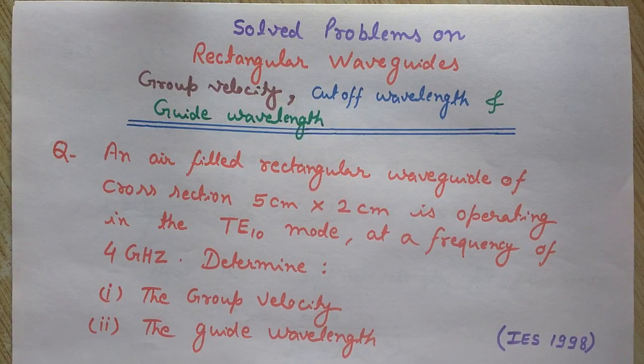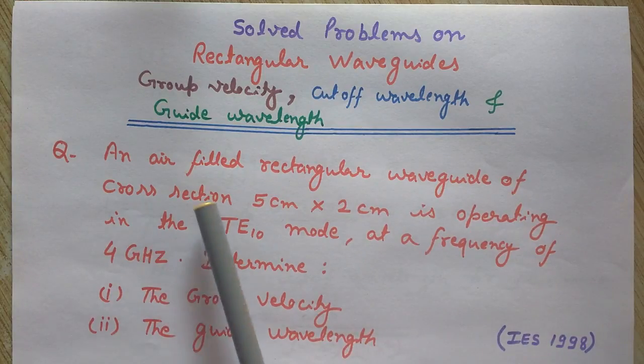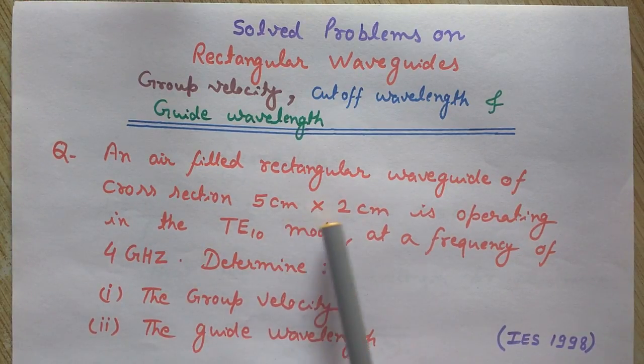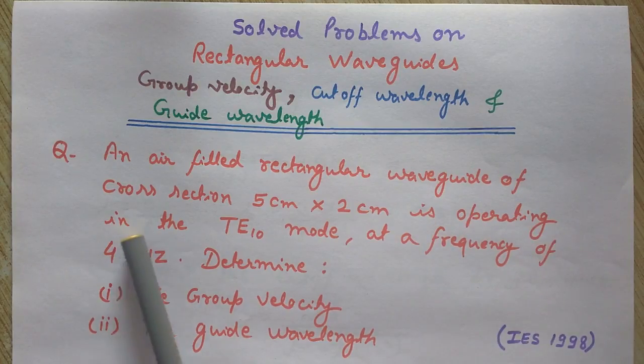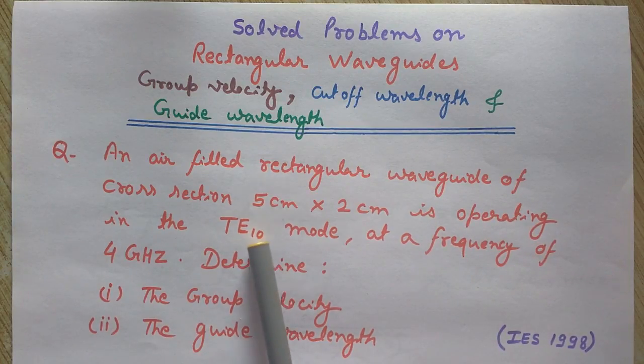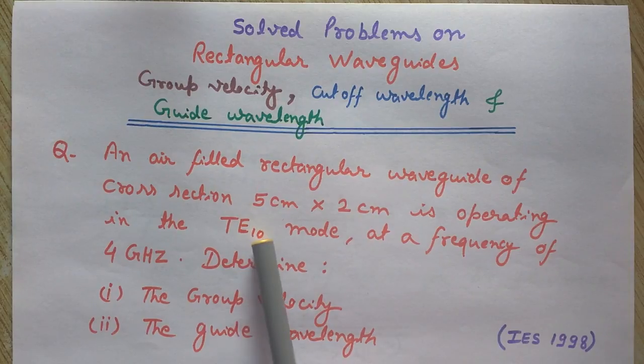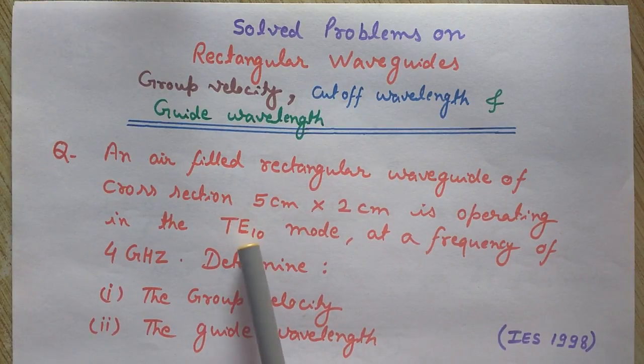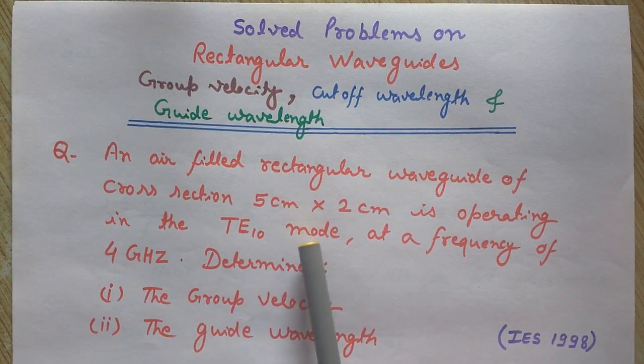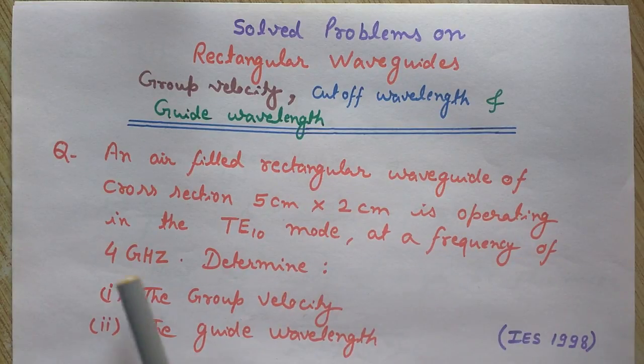So let's start the problem. An air-filled rectangular waveguide of cross-section 5 cm by 2 cm is operating in the TE10 mode. This is M, this is N, TEMN. M is 1 here and N is 0 in this mode at a frequency of 4 GHz.